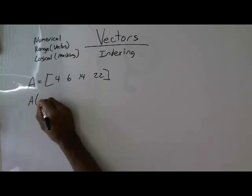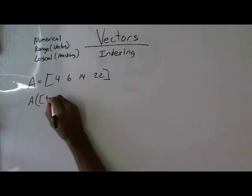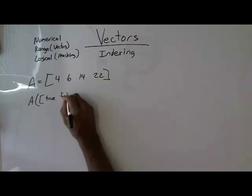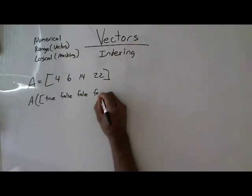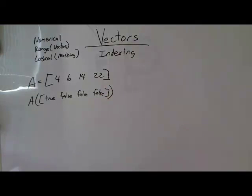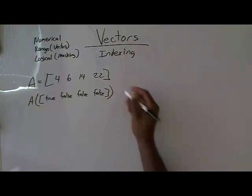give me vector A indexed at true, false, false, false. Okay, what will that do?